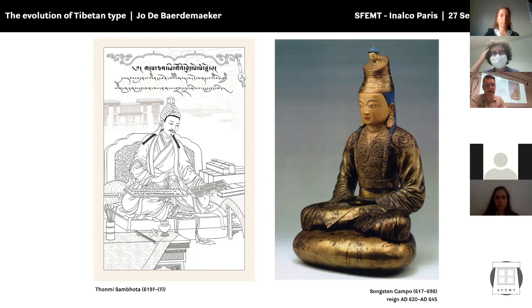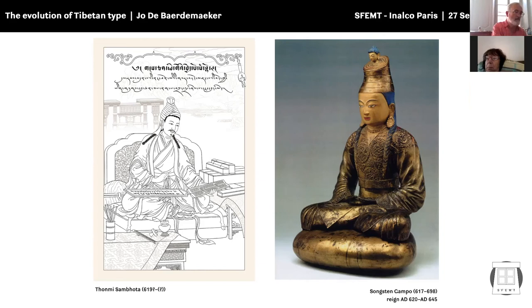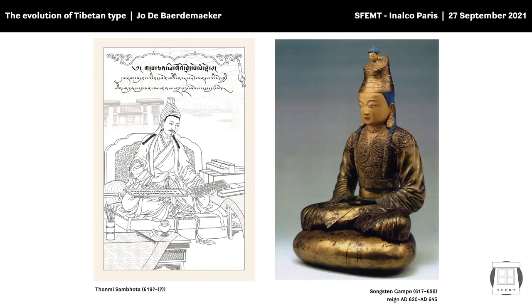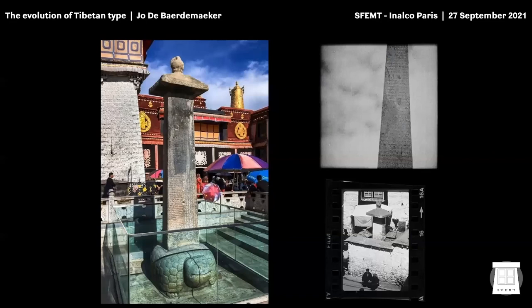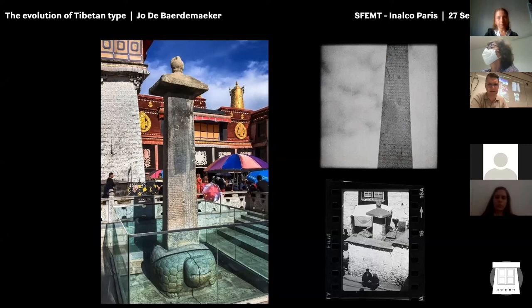He sent Tonmi Sambhota — the image on the left, the figure with manuscripts — to the north of India, where Tonmi studied writing systems based on the Gupta script, a north Indian writing system, to study the characteristics and structure of the writing system, and then came back to Tibet — now the Tibetan Autonomous Region — to develop its own writing system. Here you can see one of the earliest examples of Tibetan script in use: a stela or stone pillar in front of the Jokhang Temple in the center of Lhasa, which has presumably one of the earliest surviving examples of the Tibetan script.